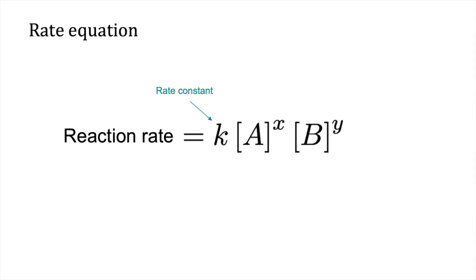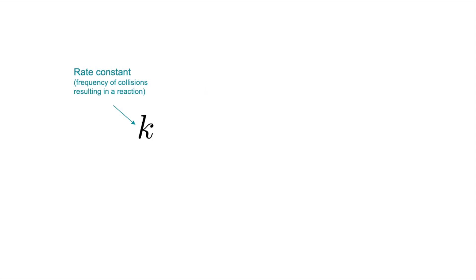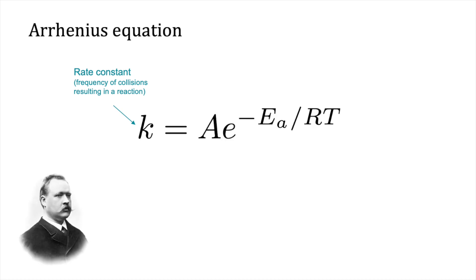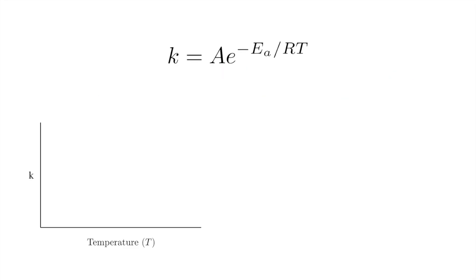So what is k, and how do we compute it? The rate constant k is a frequency for which collisions between atoms result in a reaction, and it's computed using the Arrhenius equation. On the right-hand side of the equation, there are several constants we'll ignore for now, and then we have T, which is the temperature, and Ea, which is the activation energy. As we increase the temperature, the rate constant k goes up — this shouldn't be surprising. As we heat the system, the atoms move around faster, and the faster they're moving, the more likely they are to run into each other and undergo a reaction. So this is one way to speed up a chemical reaction. The problem is that temperature equals money — the higher you need to raise the temperature, the more energy you need to put into the system, and the more expensive the reaction is.